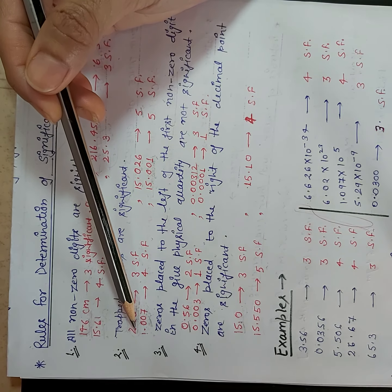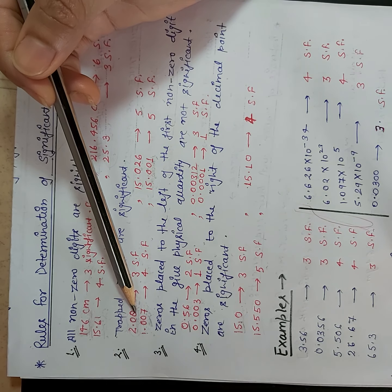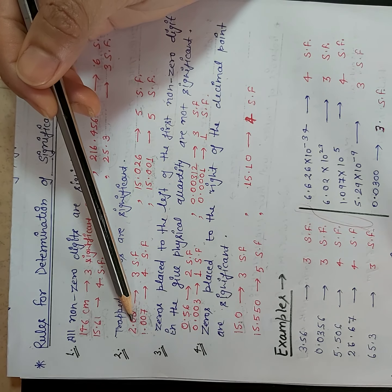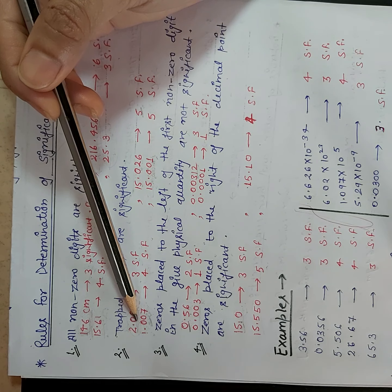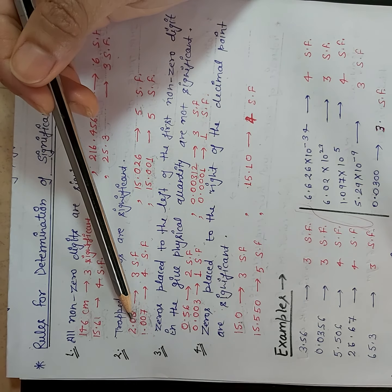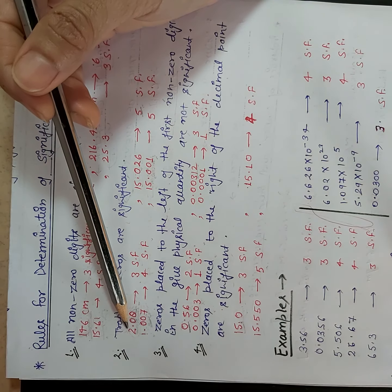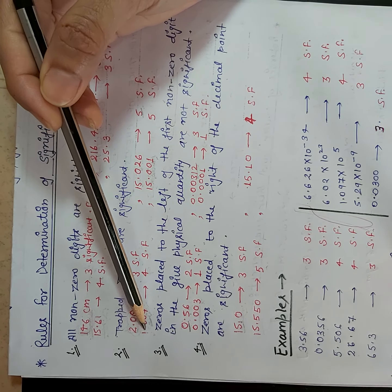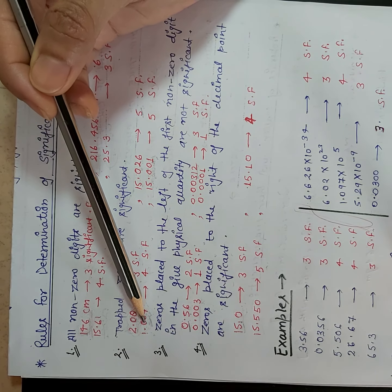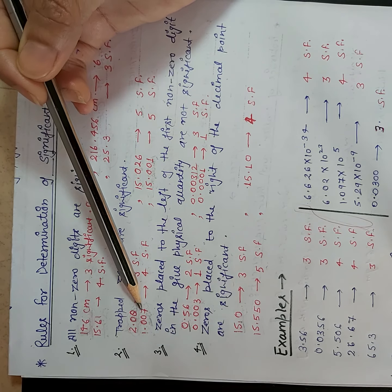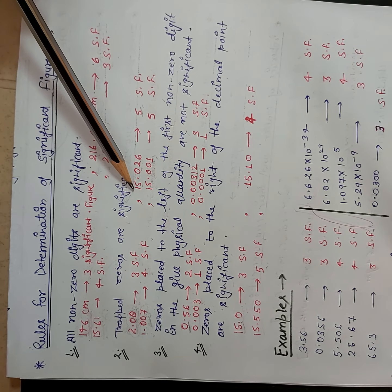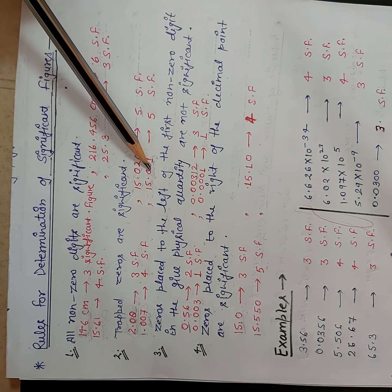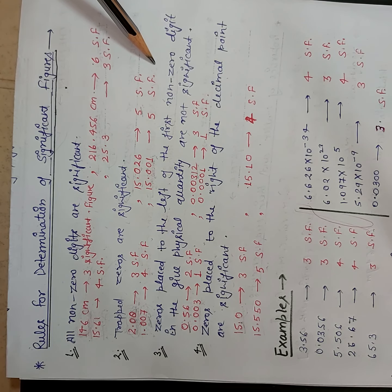See the example: in 2.08, here 2 and 8 both are non-zero digits, so they will be considered as significant. But the zero present is a trapped zero, so it will also be considered as a significant figure. So in totality we have three significant figures in this number. Similarly, 1.007 — here both the zeros are trapped zeros, so total significant figures are four. In 15.026, five significant figures, and 15.001, five significant figures again.